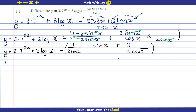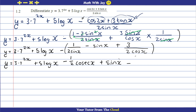This looks a lot cleaner. Writing it out: three times seven to the power of 2x, plus five log x, minus one-half cosec(x) — since one over sin(x) is cosec — plus three over two sec(x), because multiplying the negative through the sine term gives a positive and leaves 3/(2·cos x) which is sec.